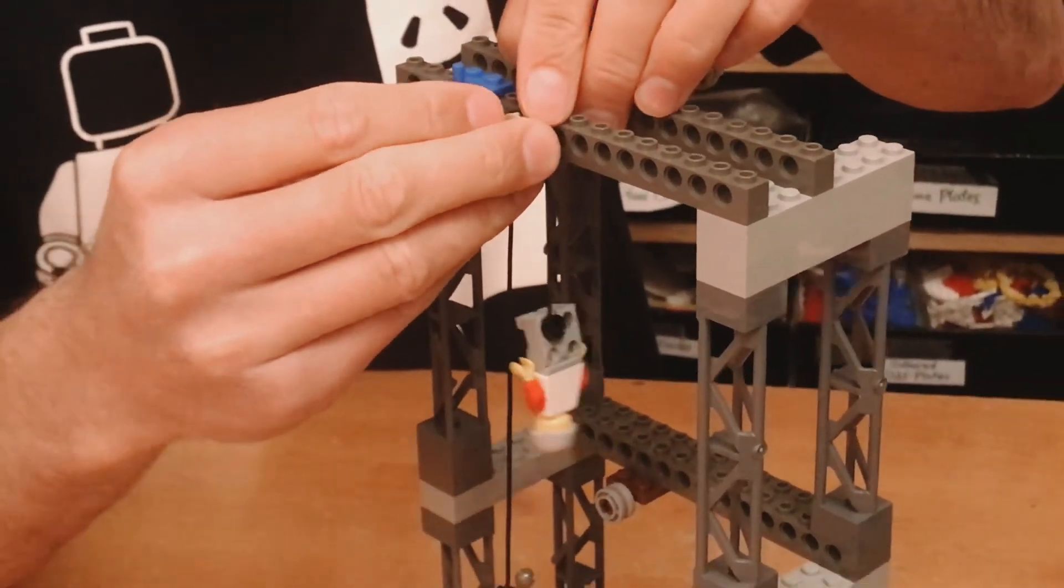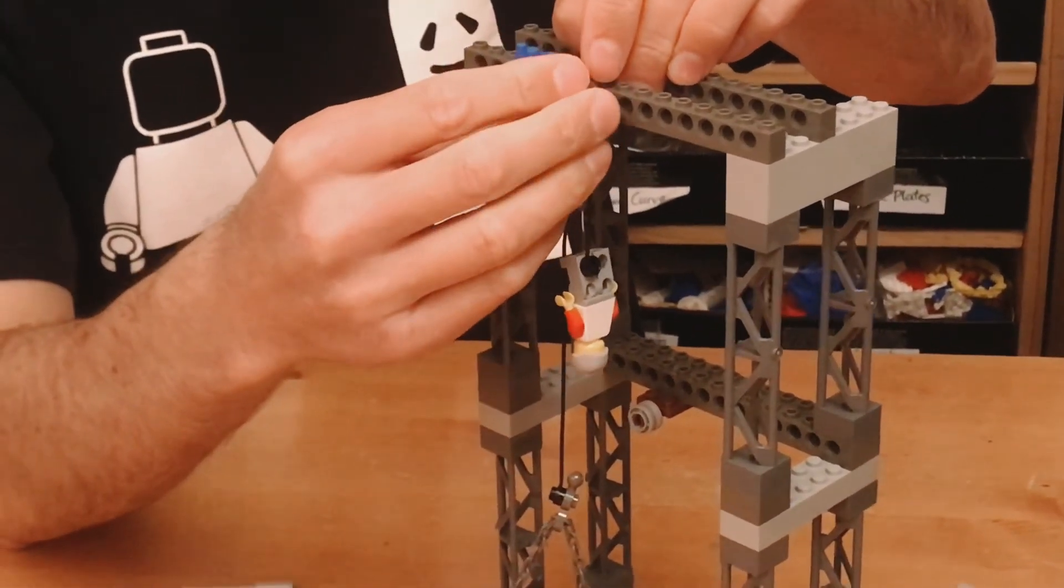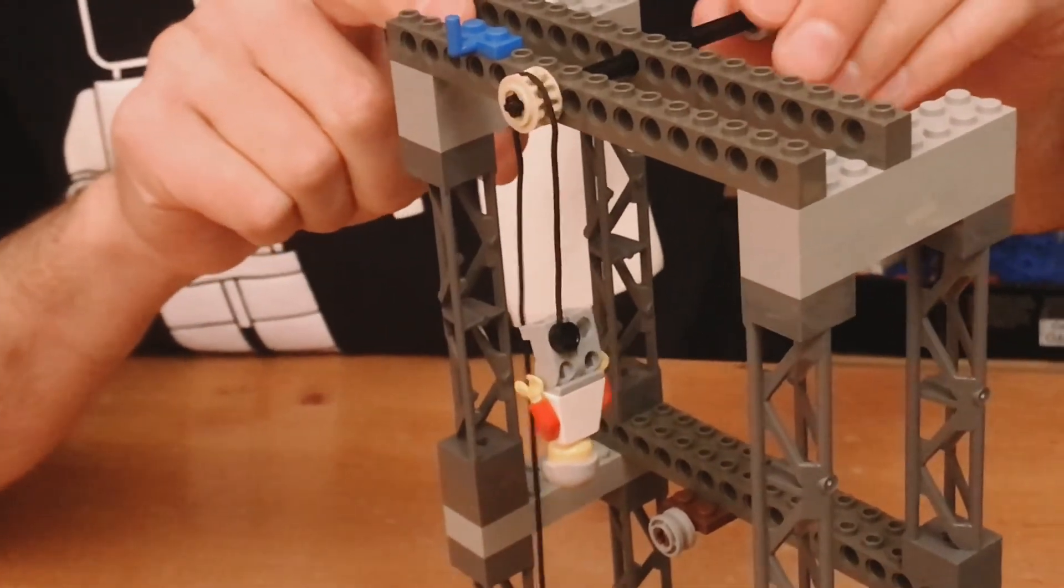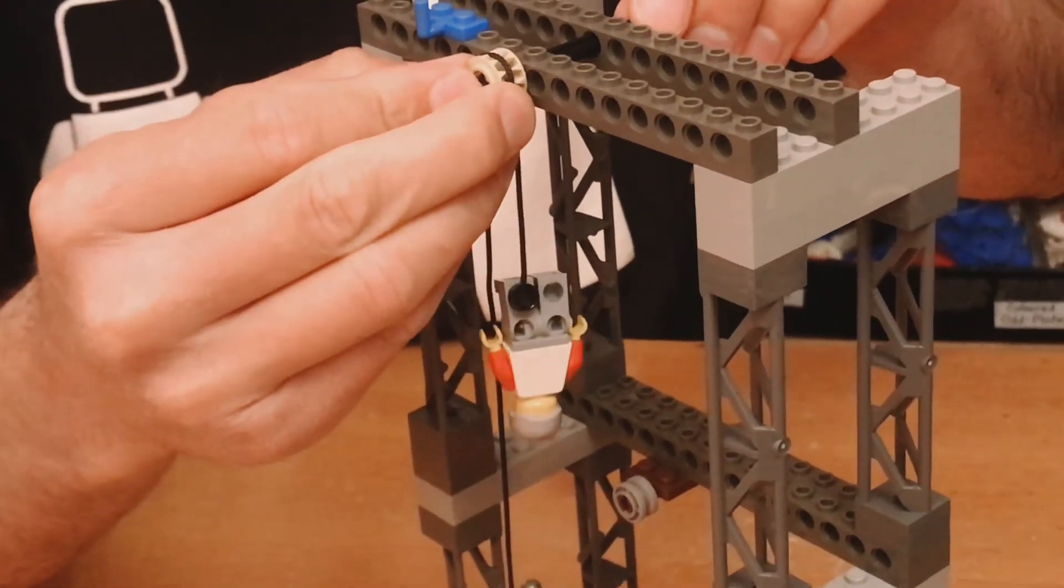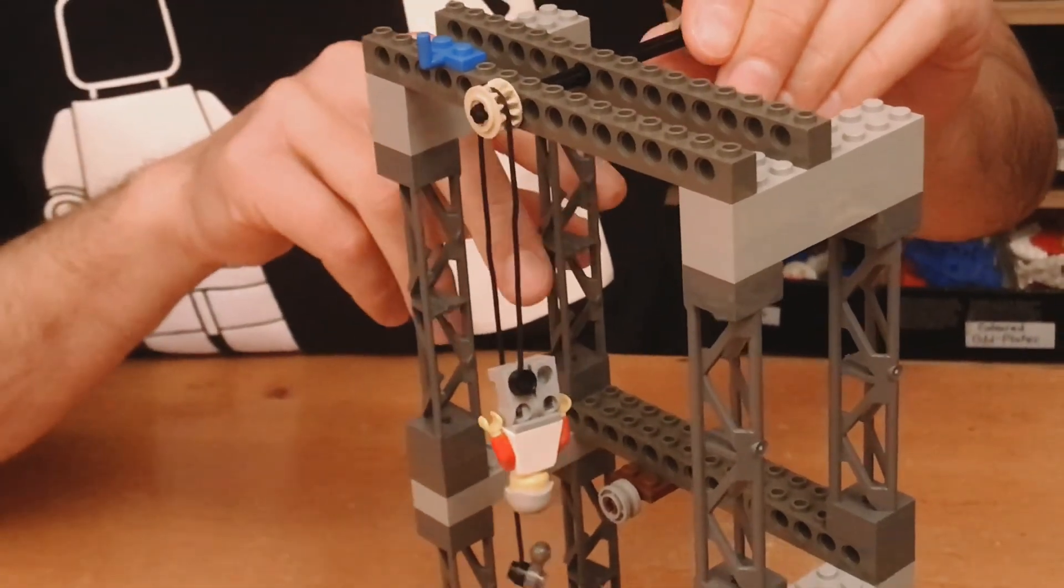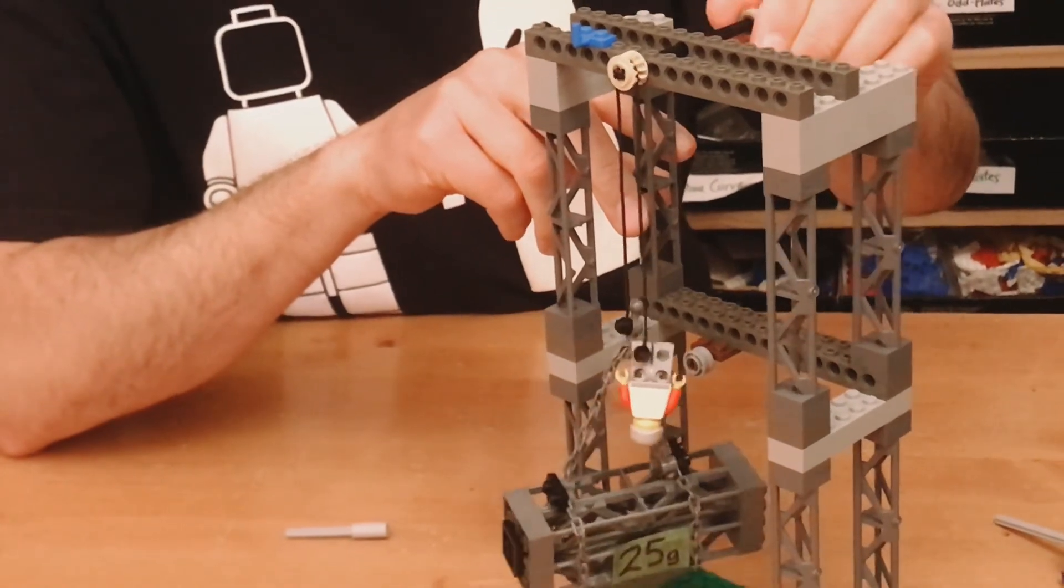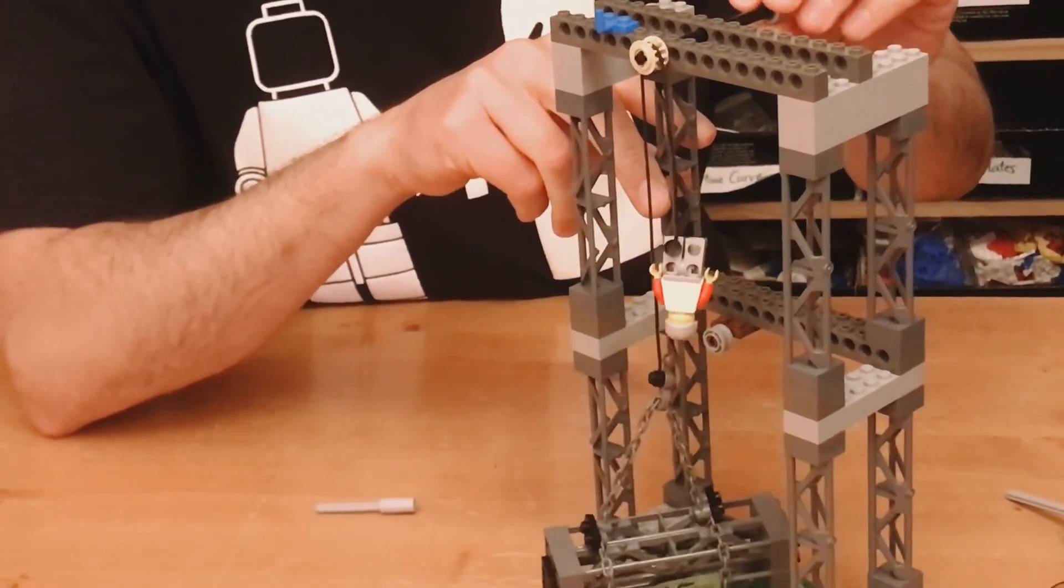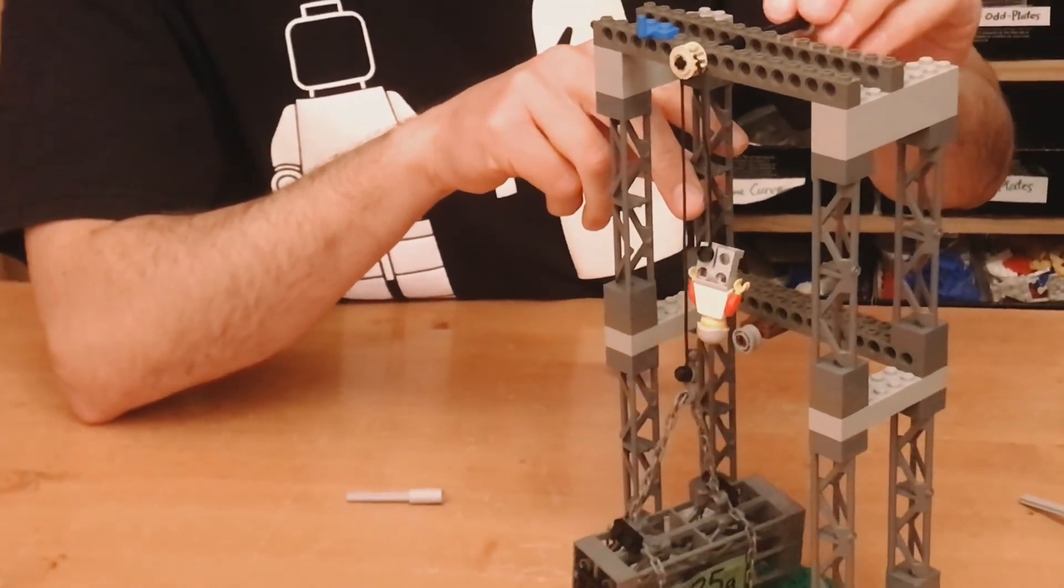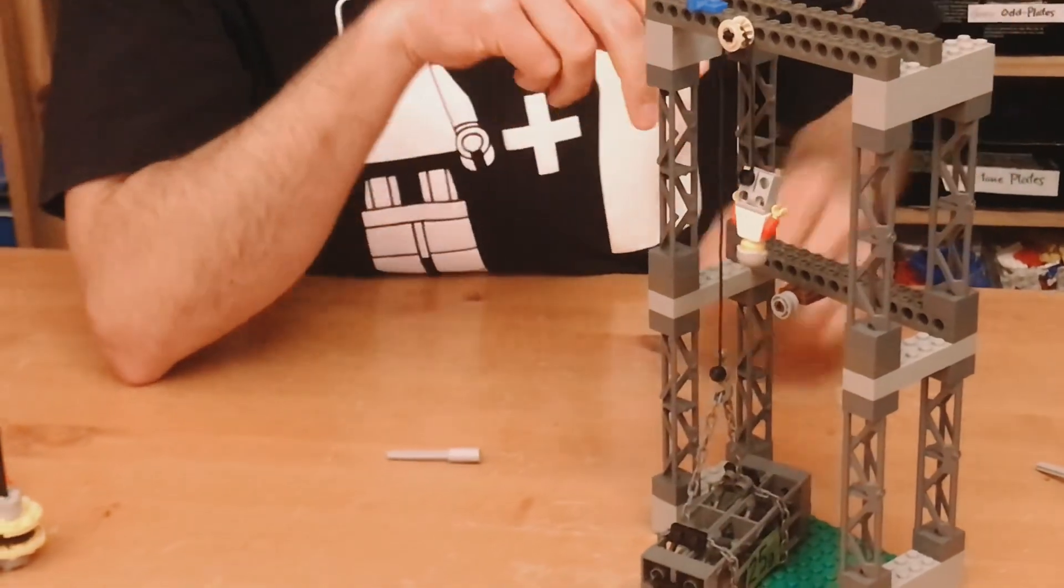But watch what happens if I separate the gears just the tiniest little bit. If I create a little bit of a gap, then the rope is able to fall into the gap and get captured. The rope is going to fall into the gap and get captured. And now we can lift up that weight without the rope slipping. So sometimes you want and need a lot of friction on your pulley in order to create a mechanism.